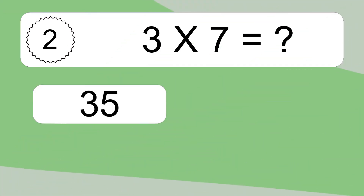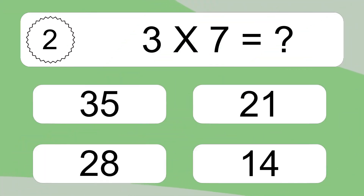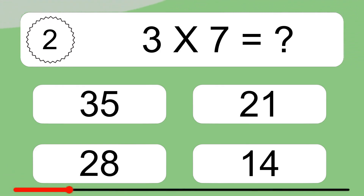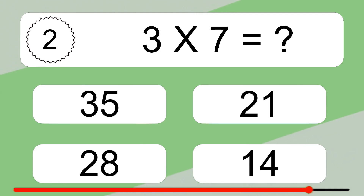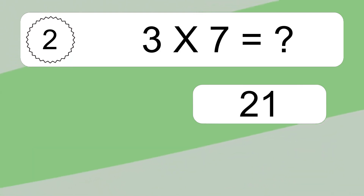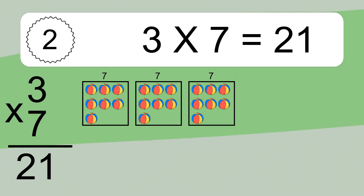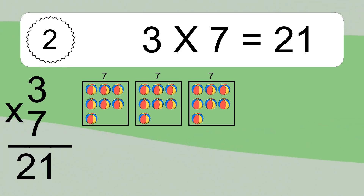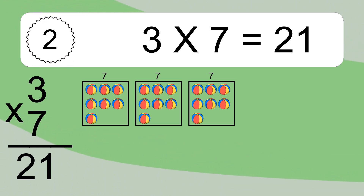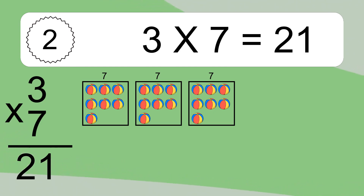3 times 7 equals what? 3 times 7 equals 21. We have 3 boxes and each box has 7 colorful balls inside. If you count all the balls in all the boxes together, you will have 3 times 7 balls. This equals 21 balls.